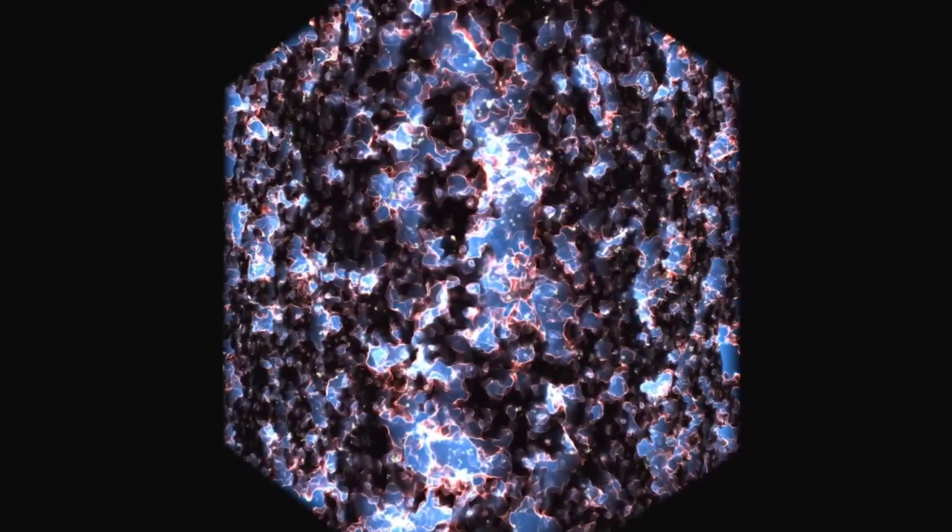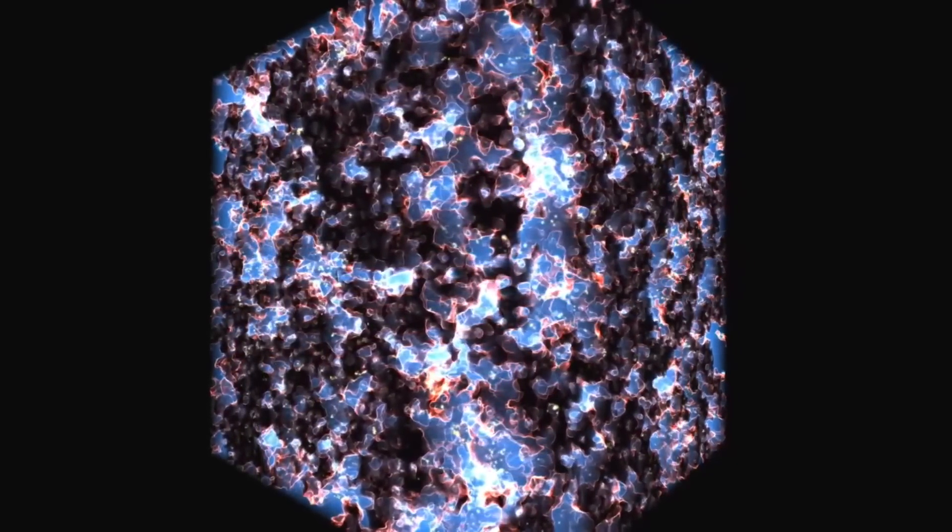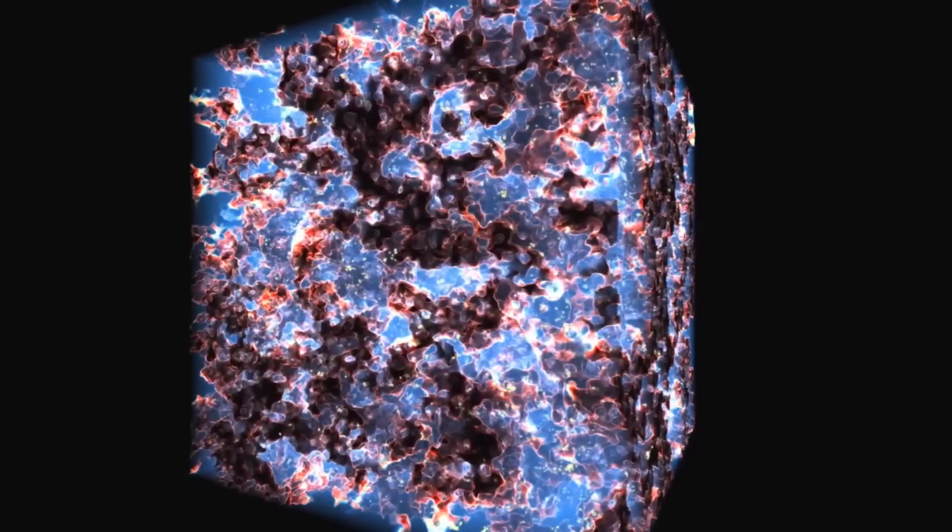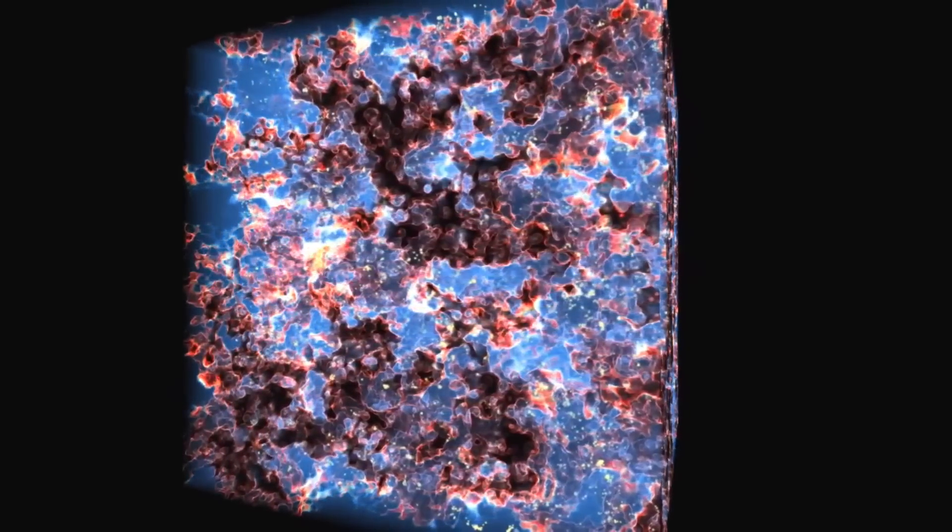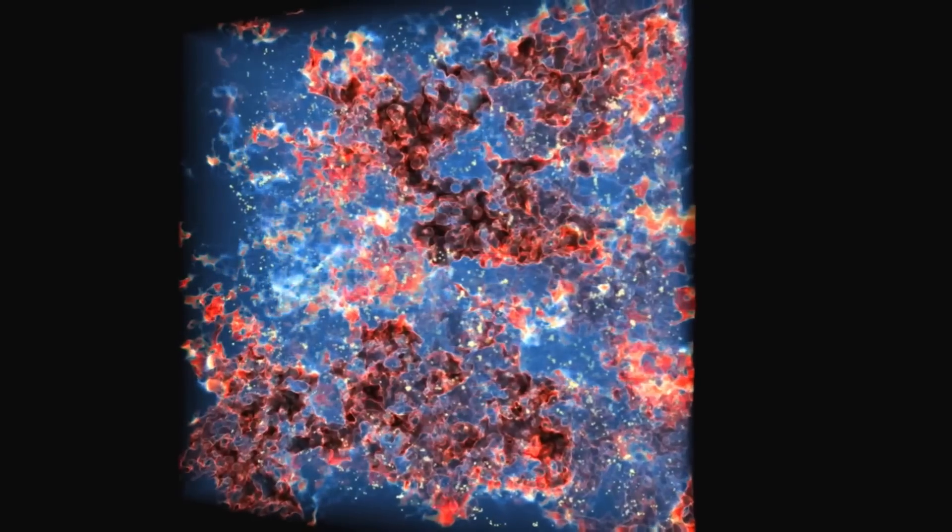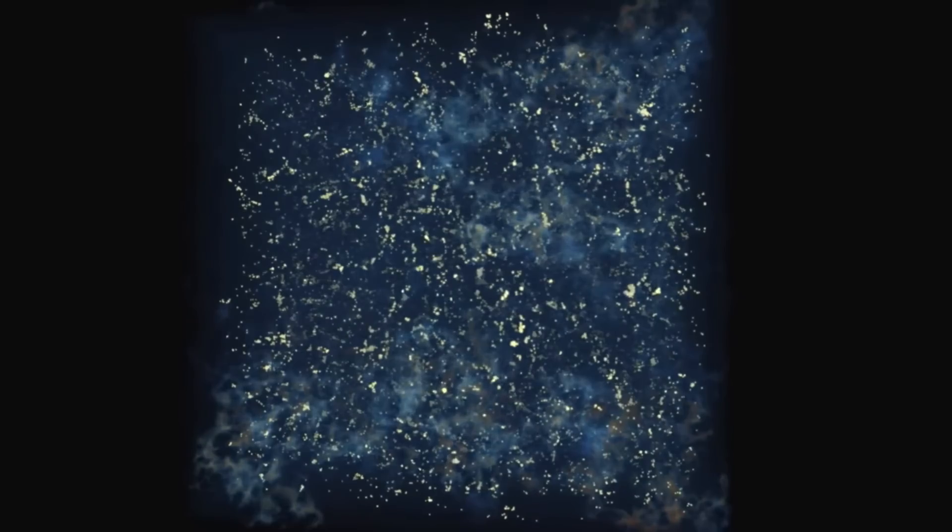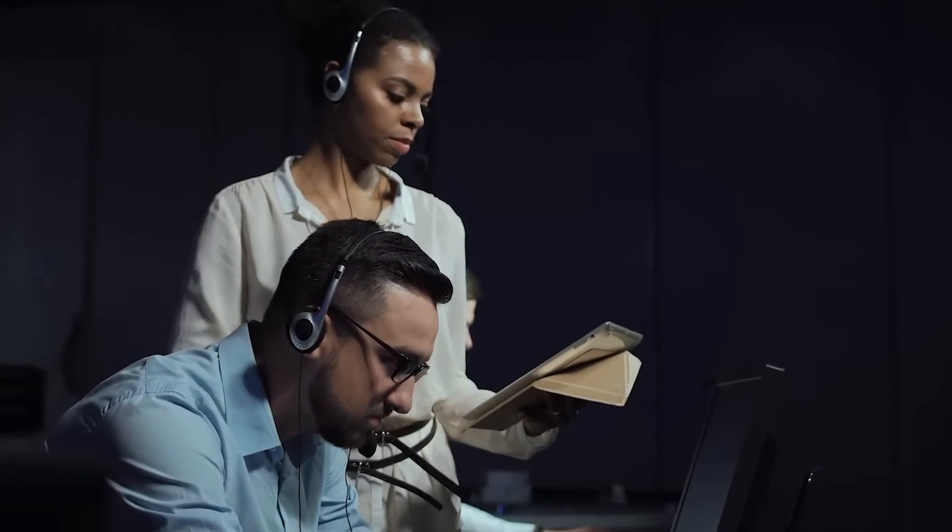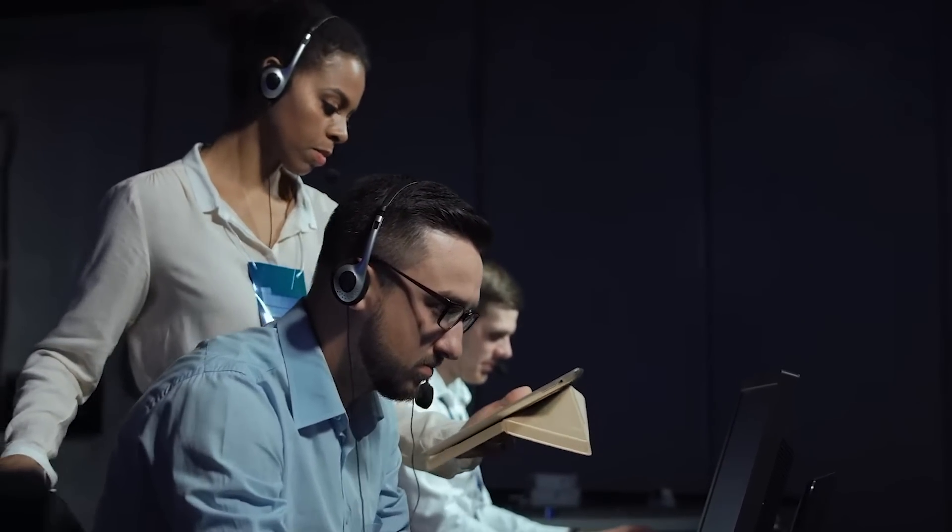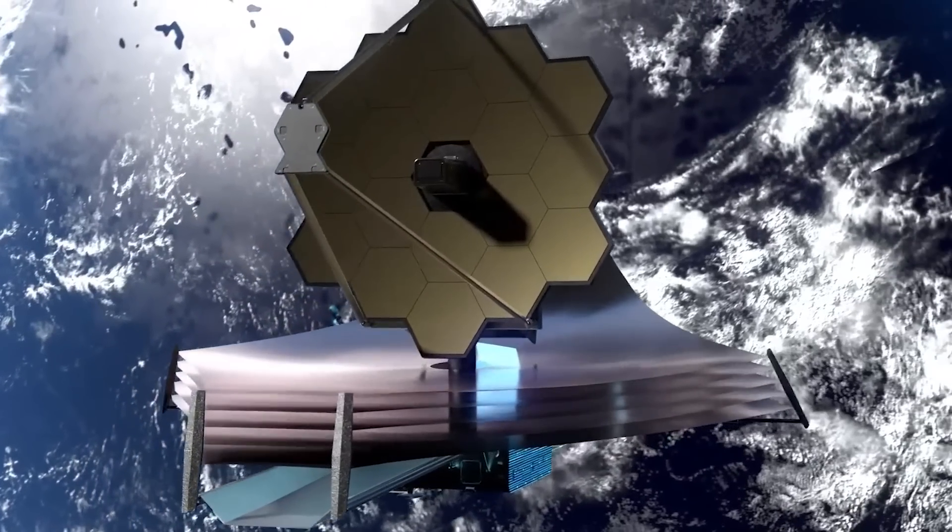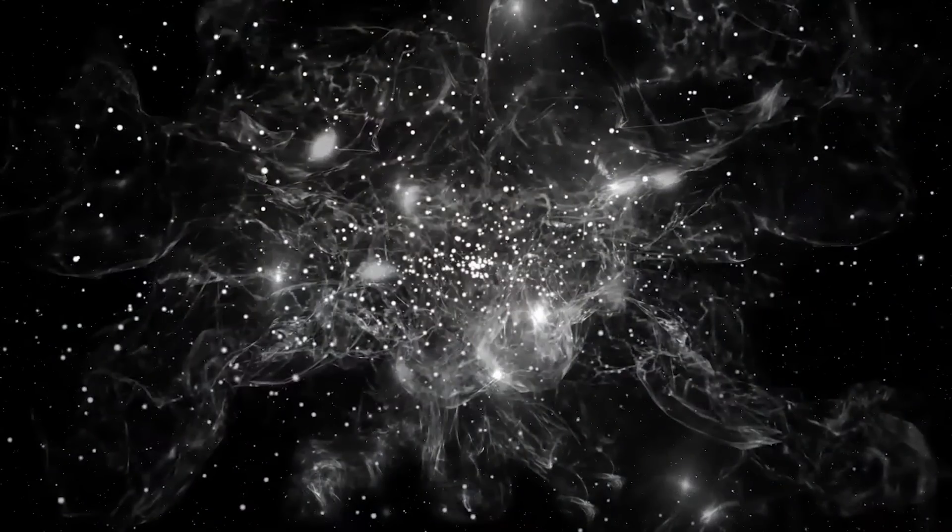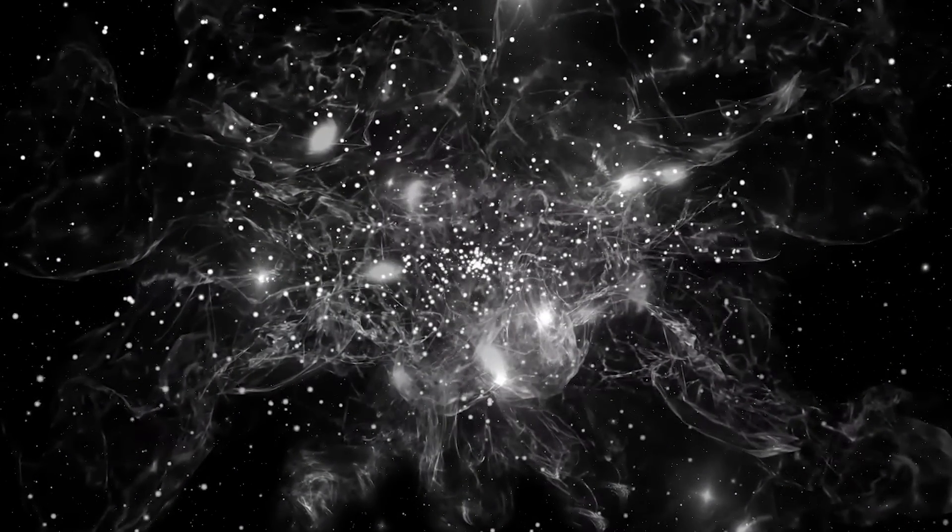Using James Webb, astronomers found that galaxies existing 900 million years after the Big Bang ionized the surrounding gas, making it transparent. Bubbles of ionized gas around these galaxies grew and merged, gradually transforming the universe into its current transparent state. These early galaxies also exhibited surprising features, such as active star formation and unexpected structures, challenging our understanding of galactic evolution.